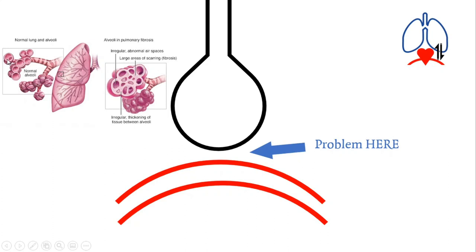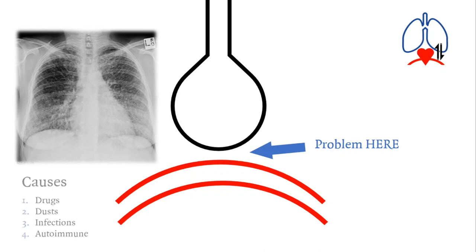The typical chest X-ray picture of interstitial fibrosis can be caused by drugs, dust, infections, or autoimmune conditions. Regarding COVID-19, the CT images show an interstitial problem as well. The picture correlated with coronavirus infection is one of interstitial ARDS — acute respiratory distress syndrome.